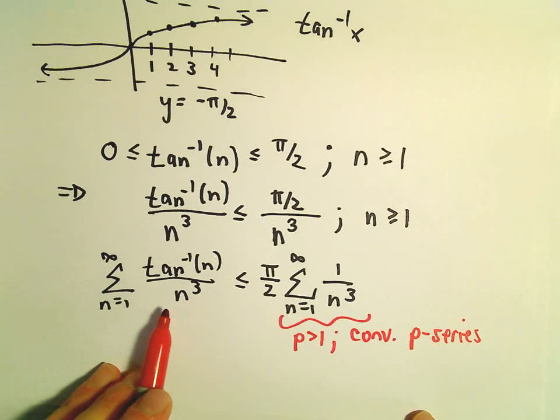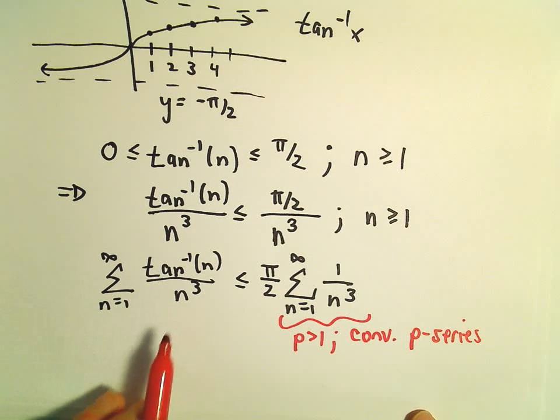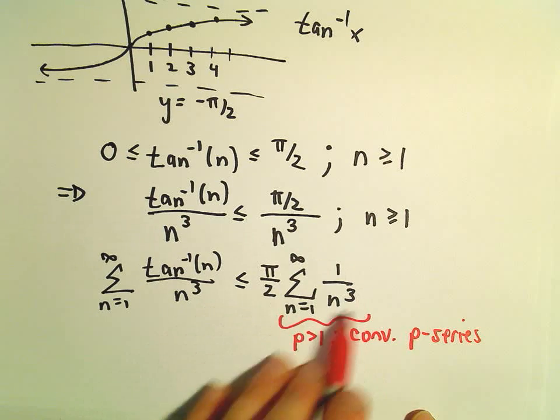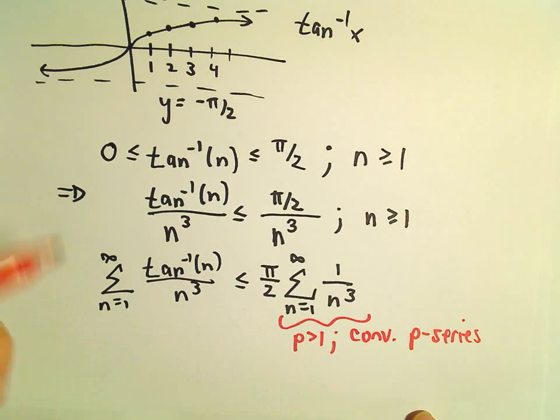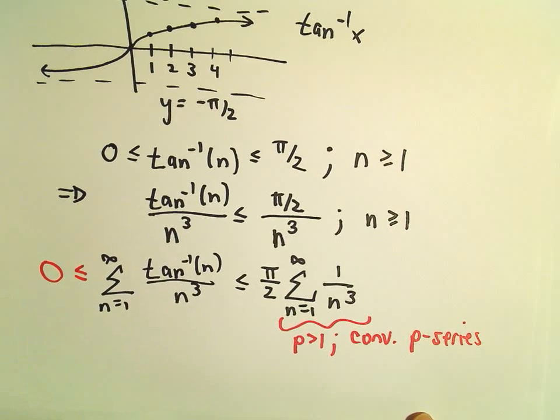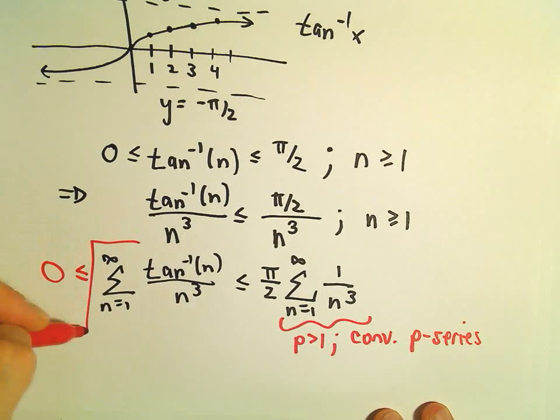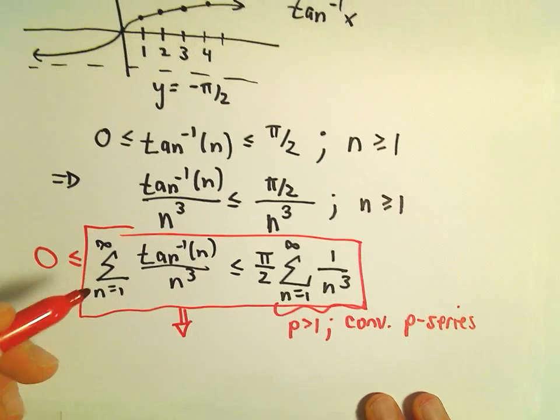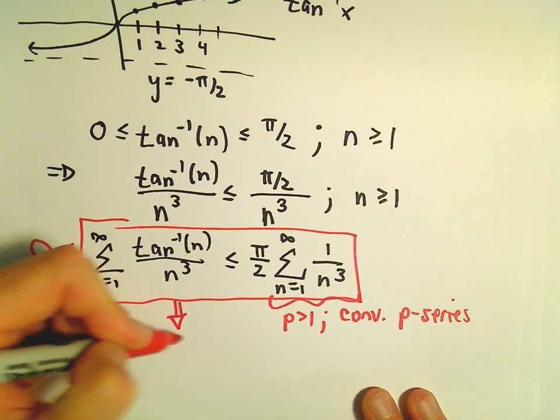And since our series that we're trying to decide whether it converges or diverges is smaller than this convergent series, and we always know that this is greater than or equal to 0, by the direct comparison test we can say that our series must also converge.